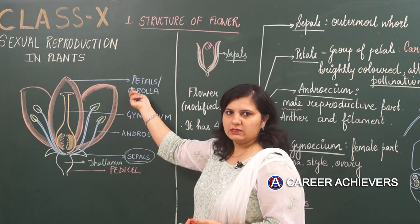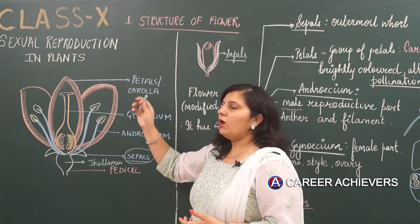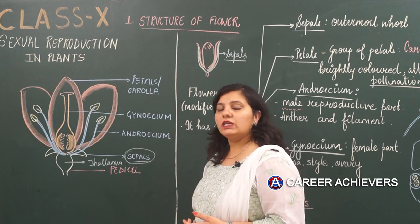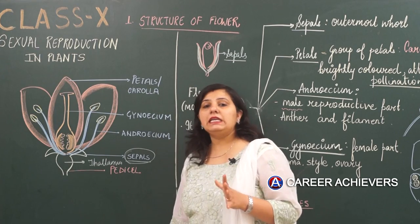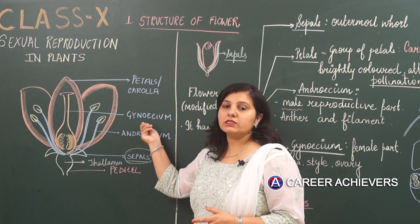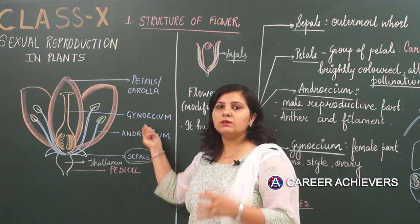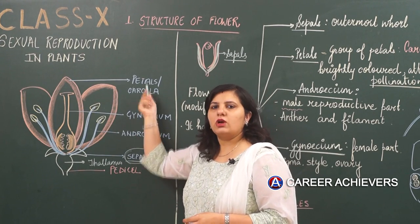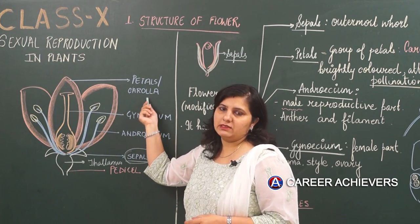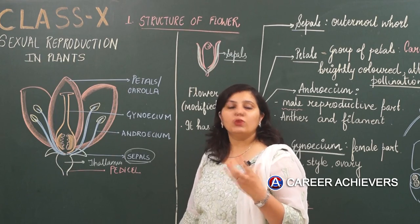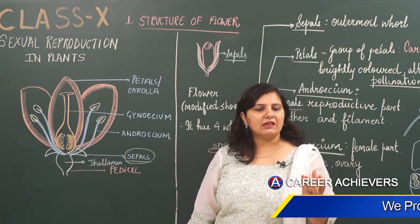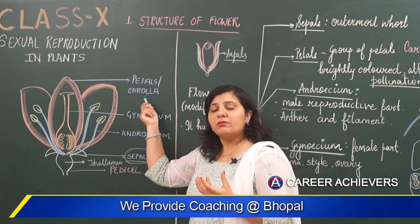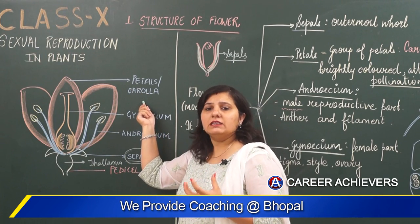The second whorl is the petals. The group of petals is called the corolla. Petals are the brightly colored part of a flower, responsible for attracting insects for pollination. They are basically the ones which beautify a flower — the reason we see a flower in its beautiful form is because of these brightly colored petals.